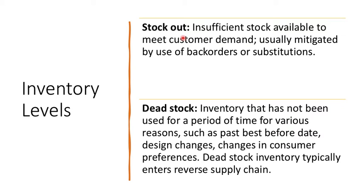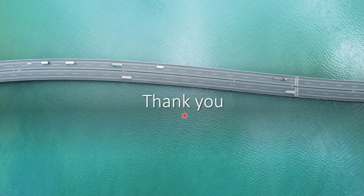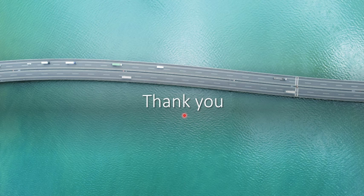Stock out is when you don't have a sufficient level of inventory. Dead stock is inventory that is no longer usable — mainly when it has expired, there has been a change or a recall, or the company no longer continues that product. All those kinds of inventory become dead stock.